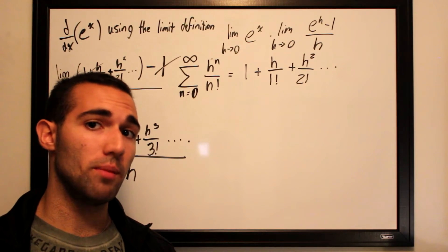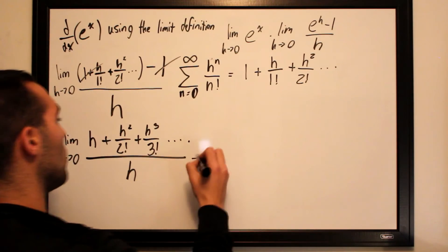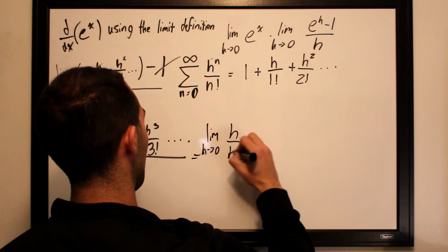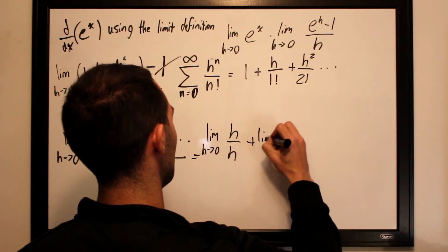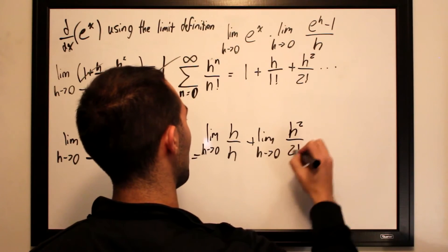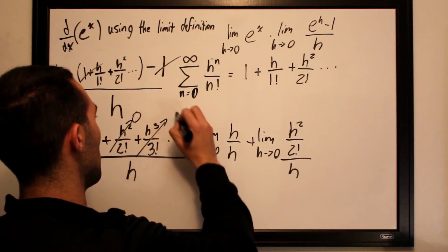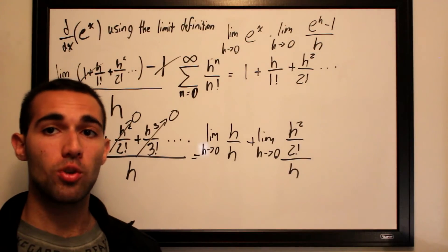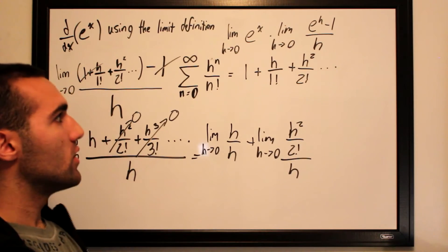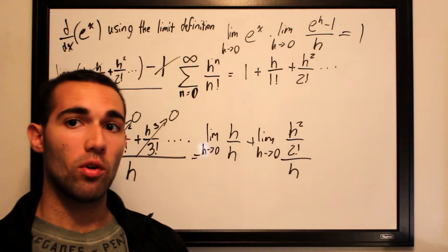This can be split into a sum of limits. The limit as h approaches 0 of h over h, plus the limit as h approaches 0 of h squared over 2 factorial divided by h, and so on. Notice that all terms except the first go to 0 as h approaches 0. However, h over h always equals 1. So everything else goes to 0, and we're left with 1 — proving that the limit as h approaches 0 of e to the h minus 1 over h equals 1.